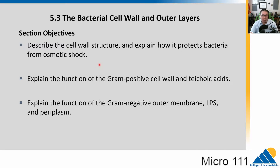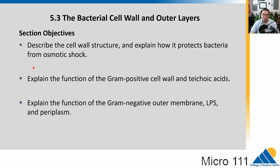We're going to talk about the cell wall now. We talked about the membrane; we're going to move a little bit outside of that and talk about the cell wall and the outer layers. We'll explain how it protects from osmotic shock — basically having too much or too little salt or solutes outside the cell. We'll talk about the gram-positive cell wall, which has teichoic acids and peptidoglycan, and then the gram-negative outer membrane, including LPS and the periplasm.